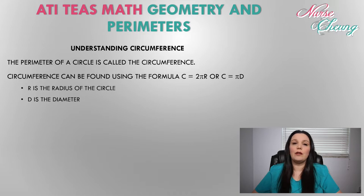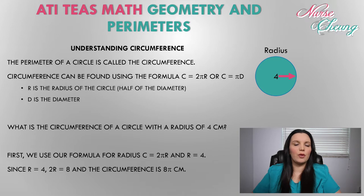r in the first equation is equal to the radius of the circle and d in the second equation is equal to the diameter of the circle. Let's take a look at an example to figure this out. What is the circumference of a circle with a radius of 4 centimeters? Well, first we know that we're going to be using the first formula that we discussed, c is equal to 2 pi r, because we know the radius is 4. r is equal to 4.